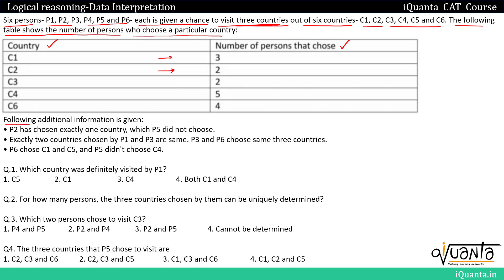Following additional information is given. First, P2 has chosen exactly one country which P5 didn't choose. Second, exactly two countries chosen by P1 and P3 are the same. Third, P3 and P6 choose the same three countries. All these clues are regarding the countries that these people are visiting.